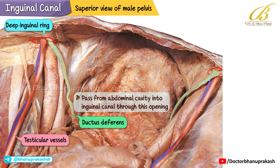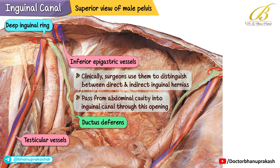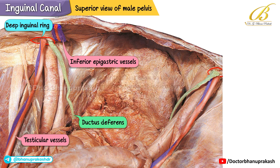Focusing on the left anterior aspect, the deep inguinal ring is related to the cut ends of the inferior epigastric vessels on its medial side. This relationship is important because these vessels form a key clinical landmark — surgeons use them to distinguish between direct and indirect inguinal hernias. Moving further medially, you can identify the lacunar ligament.